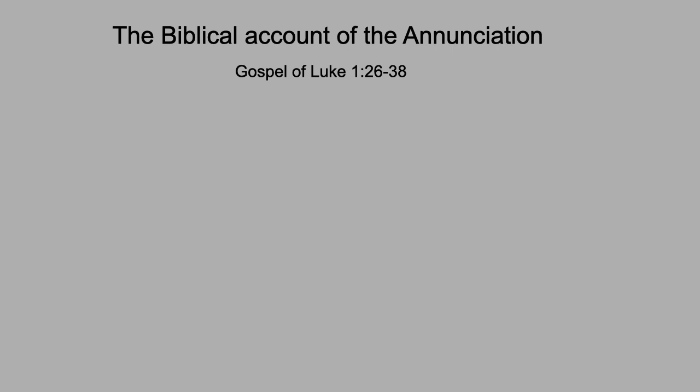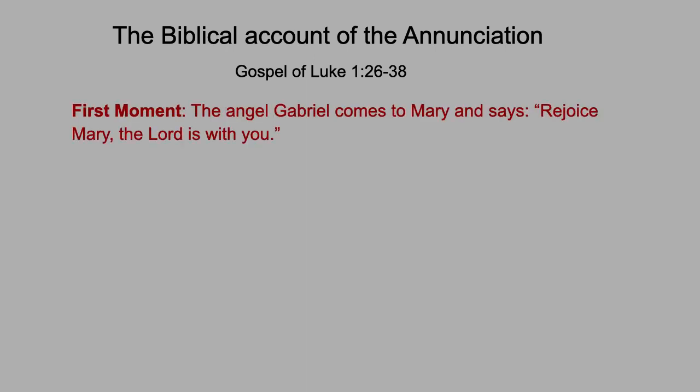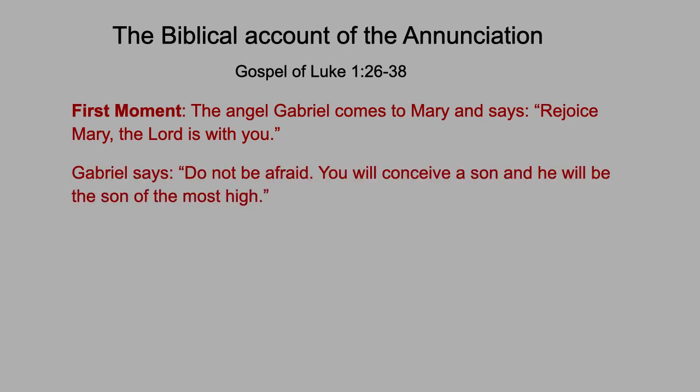It's interesting to note that the story of the Annunciation appears only in one of the four Gospels. It appears at the beginning of the Gospel of Luke. We hear that Gabriel is sent to Mary, who is already engaged to Joseph, but they are not yet married. The story really falls into three dramatic moments. The first moment begins when Gabriel arrives and he says, 'Rejoice, Mary, the Lord is with you.' The story tells us that she's not a little bit frightened, and so Gabriel has to follow up quickly and say, 'Do not be afraid.' He explains the plan — that she will conceive a son and he will be Son of the Most High.